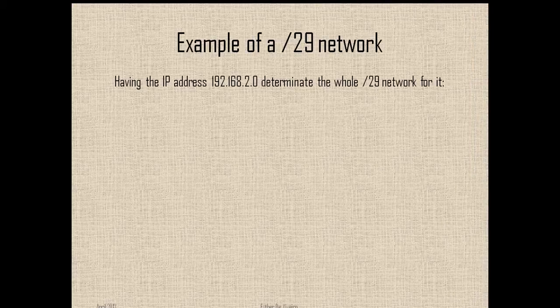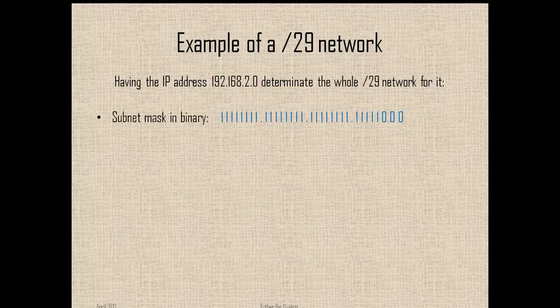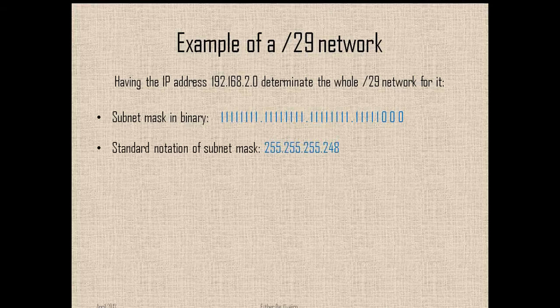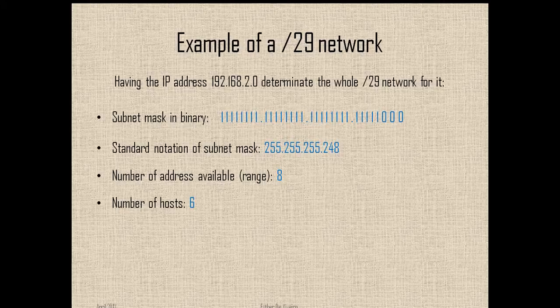So here we have an IP address and you are going to do it for the slash 29 network. Here we have the subnet mask in binary with 29 bits activated on the network portion and 3 remaining bits for the hosts. And this is the subnet mask in decimal, the range, the number of hosts, and also the number of subnets.